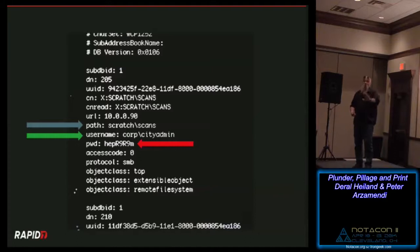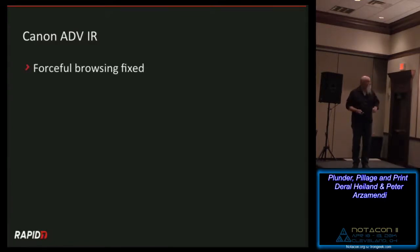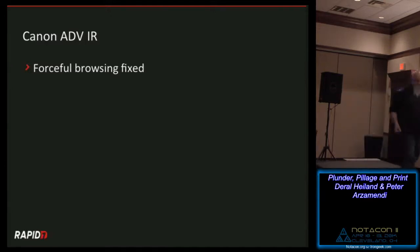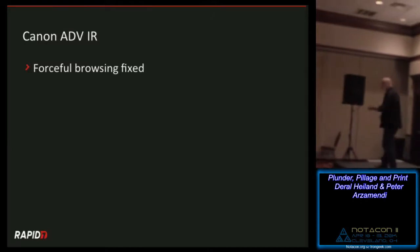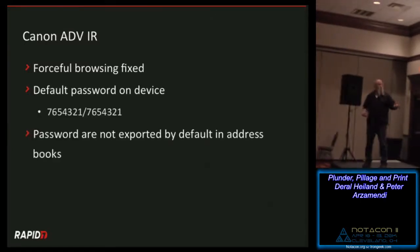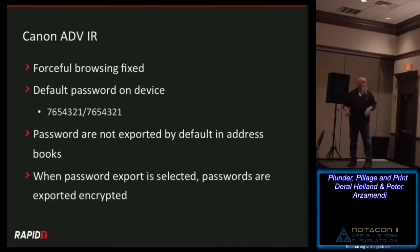It all failed because they were not patching their devices. Now let's look at the Canon ADV imageRUNNER — the advanced versions. They fixed the forced browsing attack, set default passwords on the device, and passwords are not exported by default in address books. When passwords are exported, they're exported encrypted. They recoded their devices based on stuff I published — but we're going to show how to violate those changes.